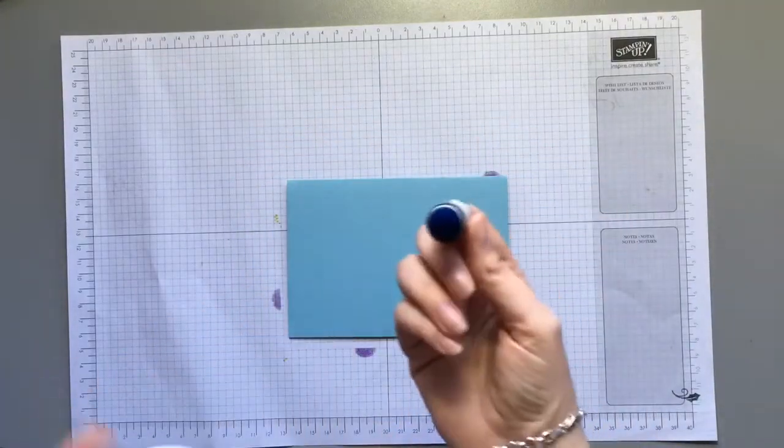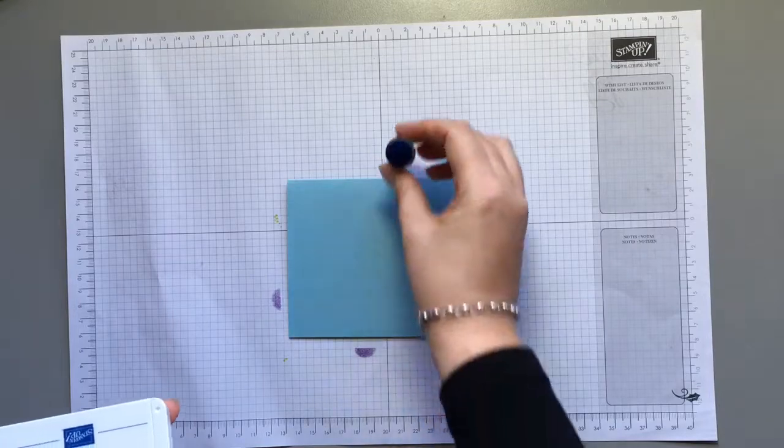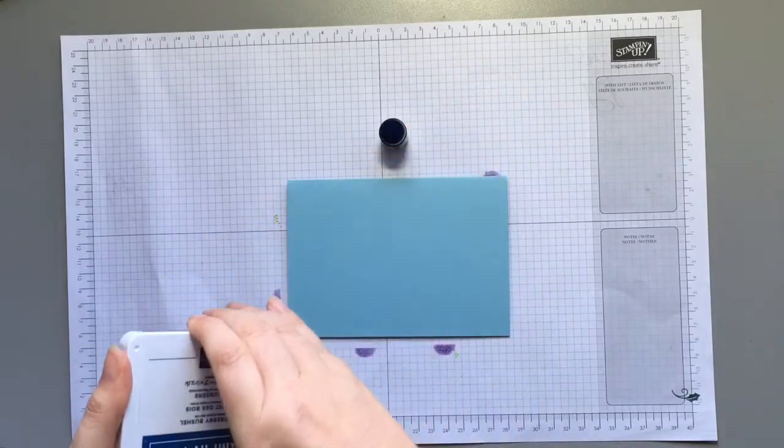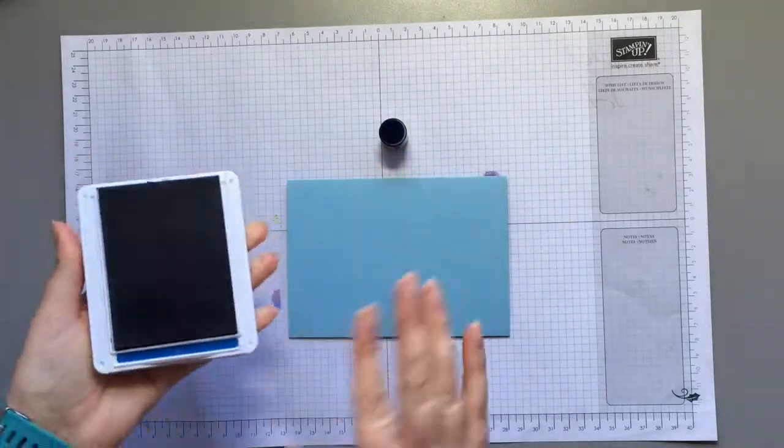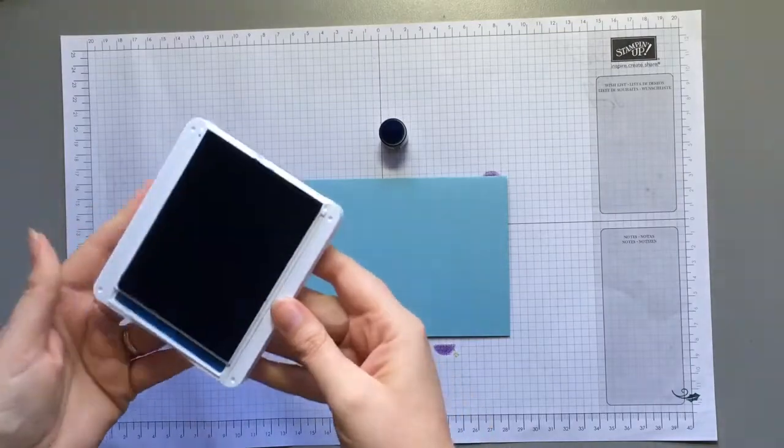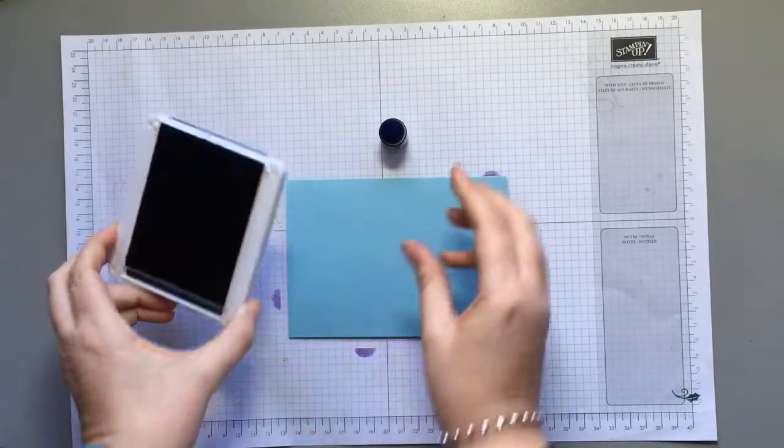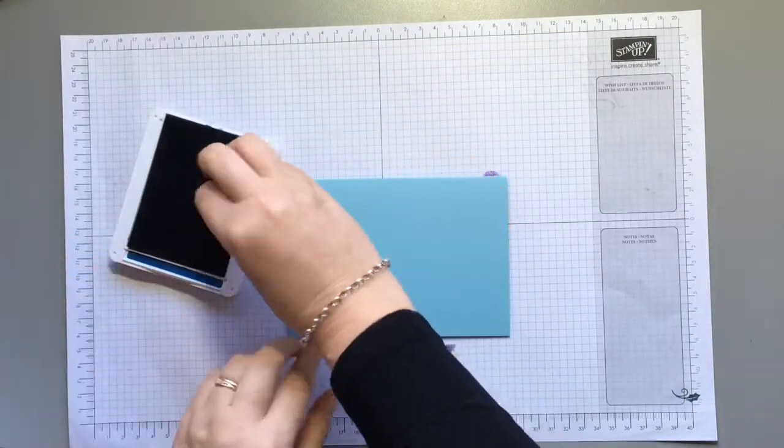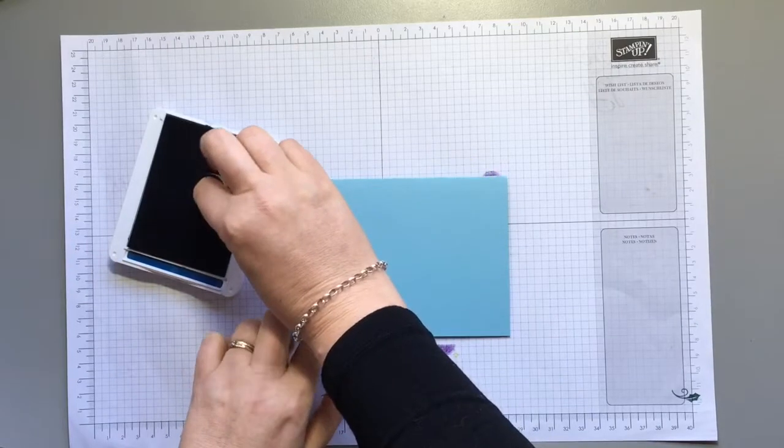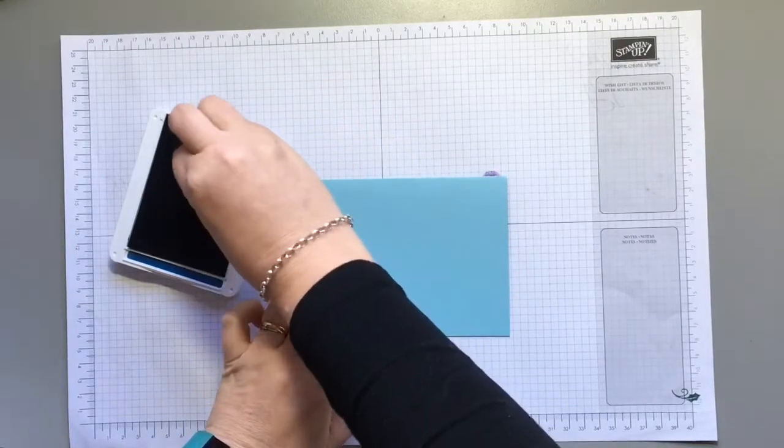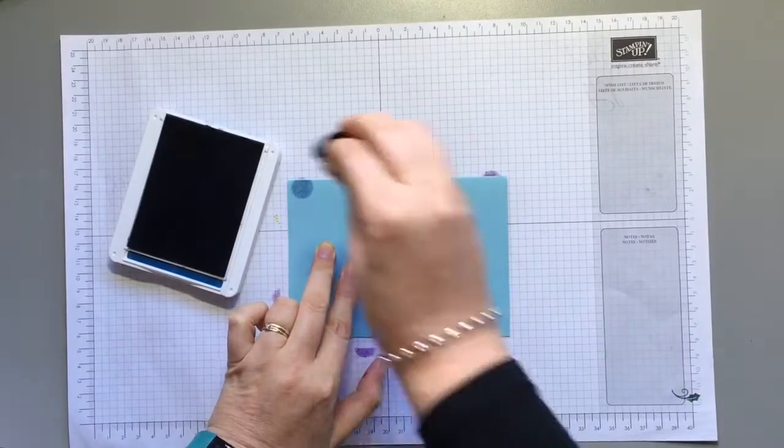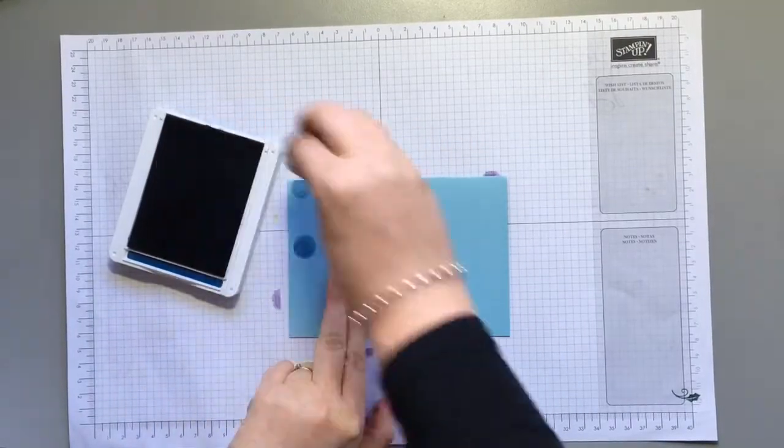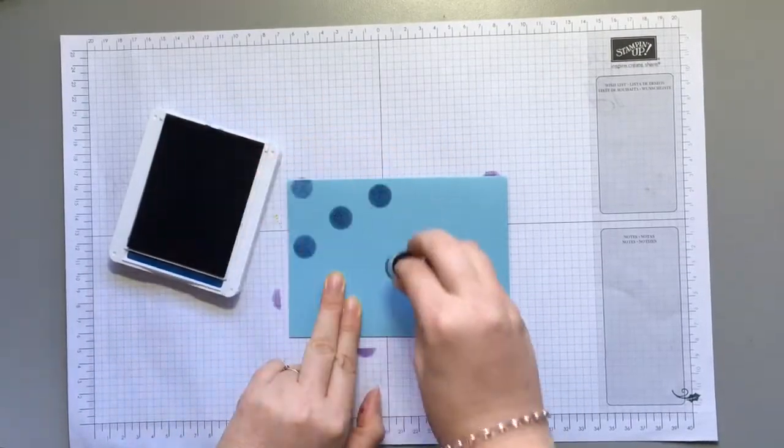For the background I've used a sponge dauber and this time I'm going to use Blueberry Bushel and all I do is I ink it up and then I randomly put spots on the card base.